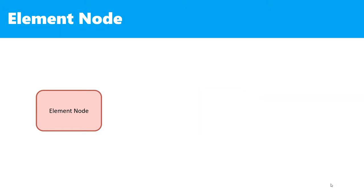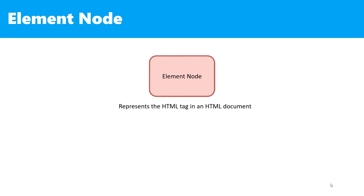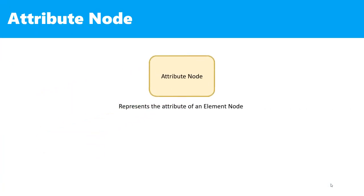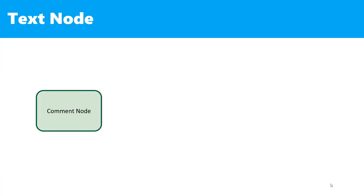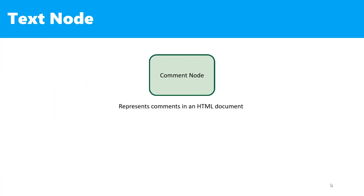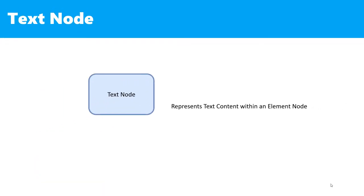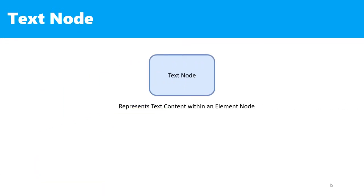An element node represents the HTML tag, like the paragraph tag, the h1 tag, and the div tag. The attribute node represents an attribute within an element node, like the href attribute, the id attribute, and the class attribute. Next we have the comment node — it's the comment that you write on your HTML web page. And finally, we have text nodes, which represent the text content or value within an element node.